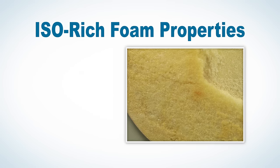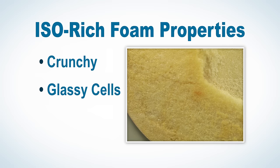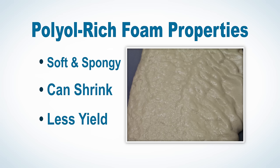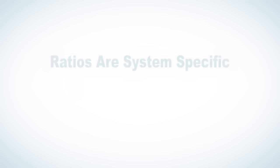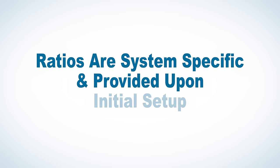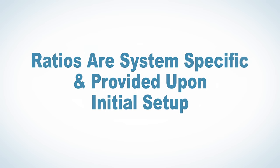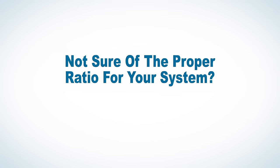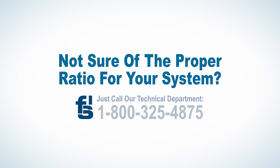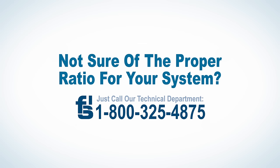ISO rich foam can be crunchy, have glassy cells, and result in less yield. Polyol rich foam can be soft and spongy, can shrink, and can also result in less yield. Ratios are system specific and provided upon initial setup. If you're not sure of the proper ratio for your system, please contact FSI technical service for assistance.